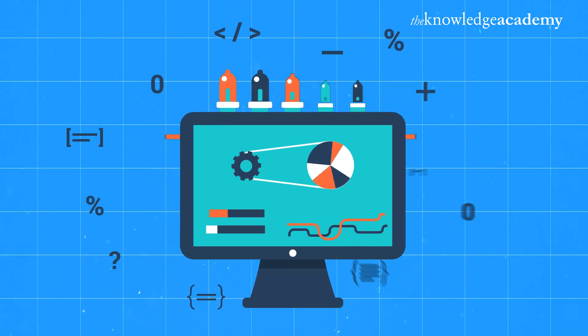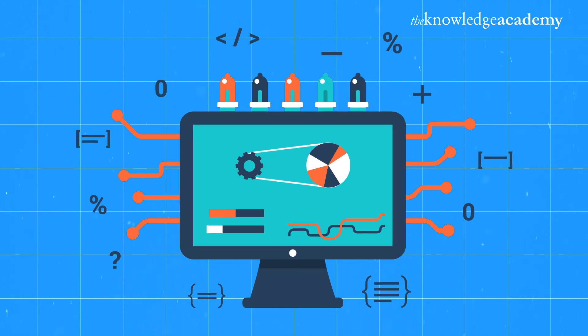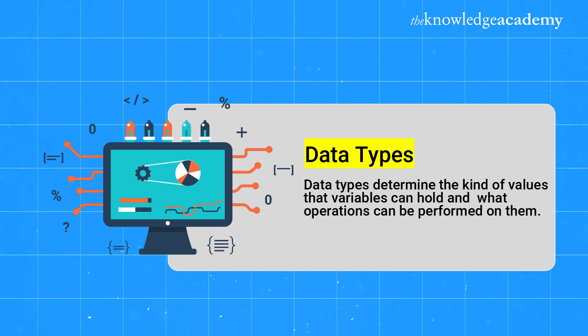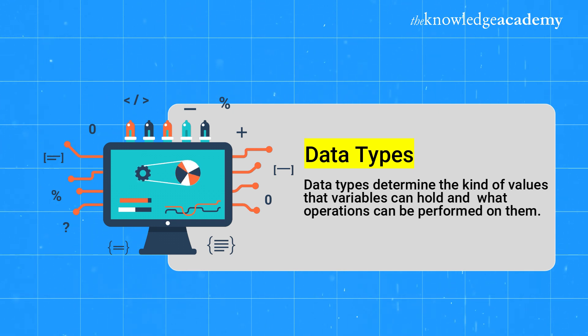Understanding data types is crucial in machine learning. Data types determine the kind of values that variables can hold and what operations can be performed on them. Let's go through the main data types you'll encounter.